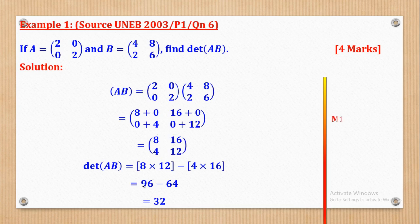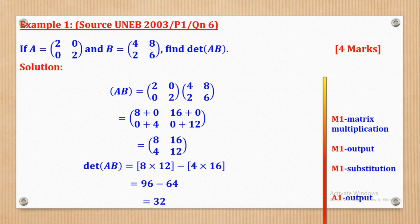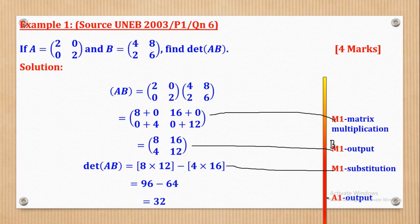Looking at how marks are awarded: M1 was for the matrix multiplication, M1 for the output of AB, then another M1 for the substitution into the determinant formula, and M1 for the final output of 32.